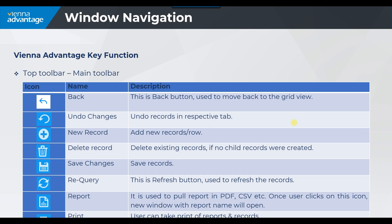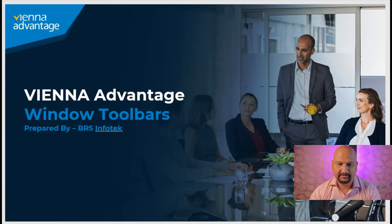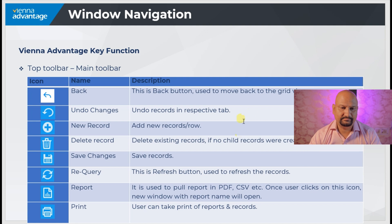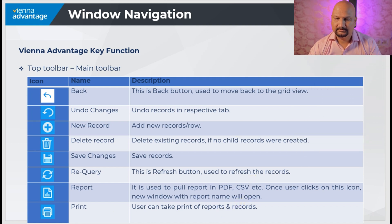Once the user clicks on the report icon, a new window with the report name will open. The last one is the print button, which is used to take the print of the reports and the records.